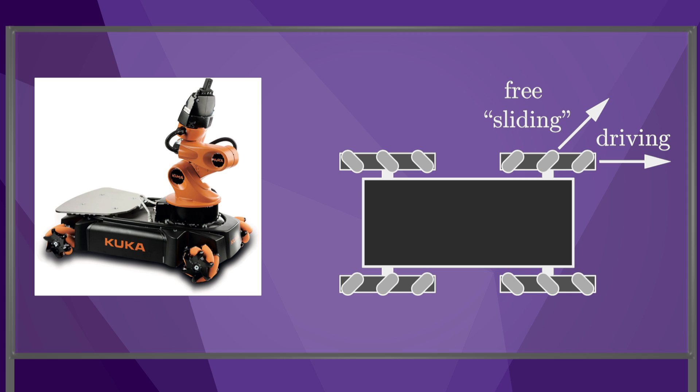This mobile base has four Mecanum wheels, which do not slip in the driving direction, but allow free sliding at an angle of 45 degrees relative to the driving direction. The principle behind the Omni wheel and the Mecanum wheel is the same, but they differ in the direction they allow free sliding.